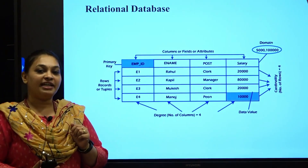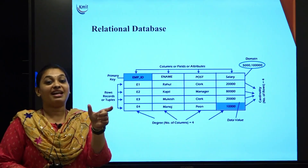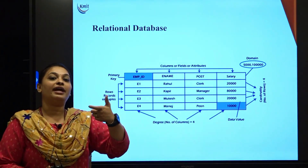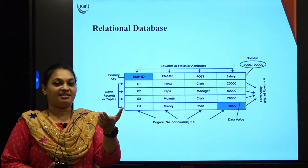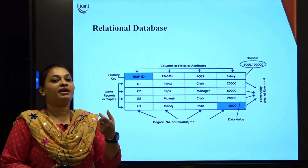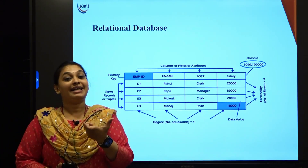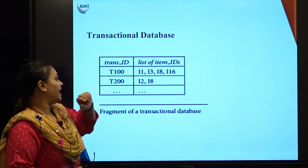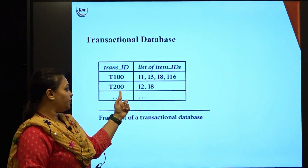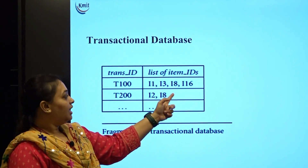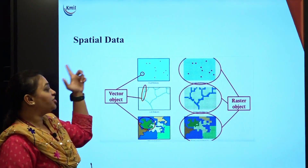The best example for a transactional database is your order copy. When you go to a grocery store or a mall, you have a transaction ID, and under that ID you get all the items you have purchased. For example, transaction ID 001 can have multiple items purchased at the grocery store or mall. In the diagram, transaction IDs like T100 and T200 each have different lists of items — that is your transactional database.